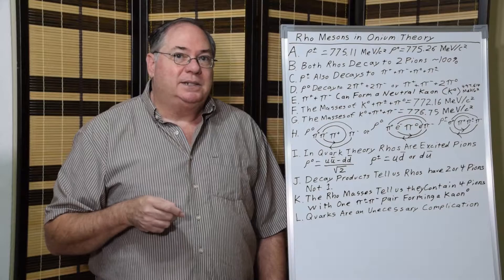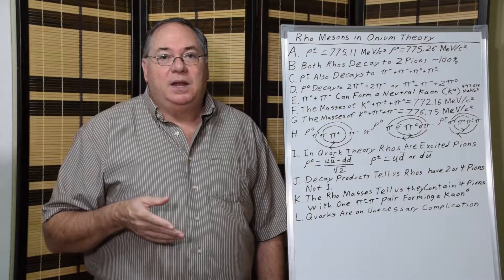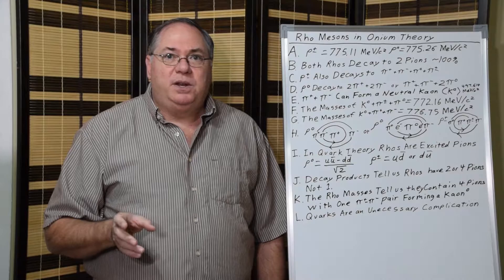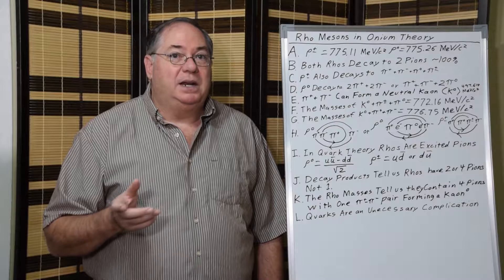To begin with, they have similar masses. The charged rho has a mass of 775.11 MeV/c², while the neutral rho has a mass of 775.26 MeV/c². Very close. They're not that precisely well known because both of these rho mesons have a very short mean lifetime.